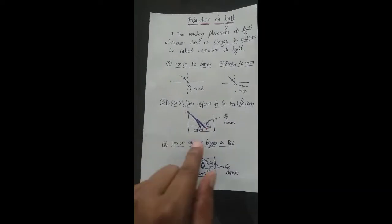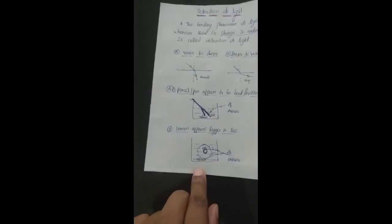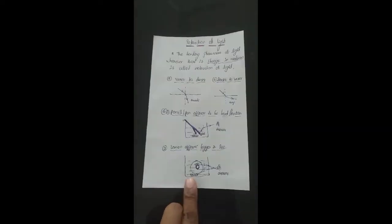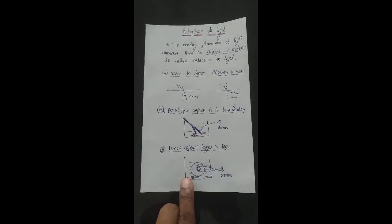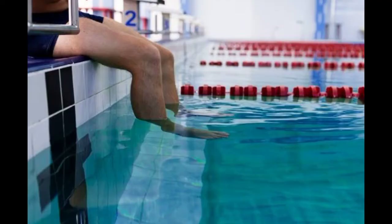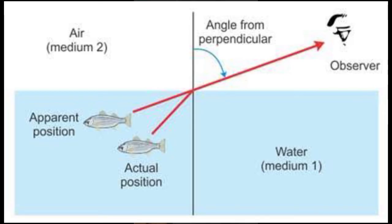Whenever light undergoes refraction, there are two positions: the real position and the apparent position. There is also a real size and an apparent size. For the same refraction of light, we see more examples: when you stand in a swimming pool your legs appear shorter; when you throw a coin in a swimming pool the coin appears to be raised in position; and a fish in water appears at its apparent position, not its real position.